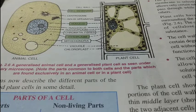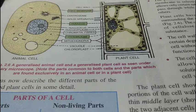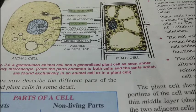The different cell organelles have different functions. The ribosomes are the site of protein synthesis, so they are called the protein factory of the cell. The mitochondria is the site of energy production or energy liberation, and hence it is known as the powerhouse of the cell.